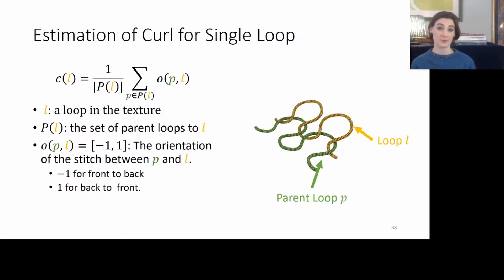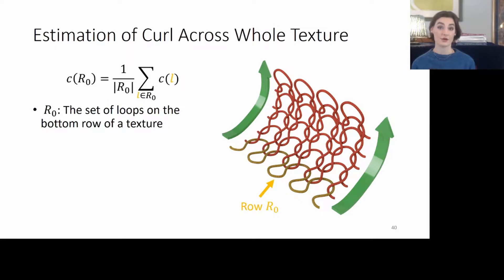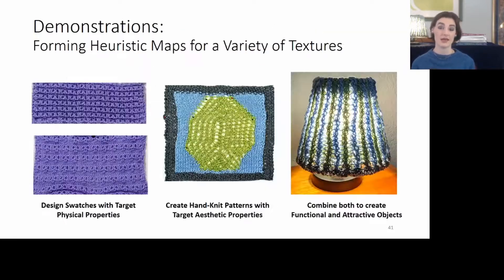An example objective is to estimate the curl of a loop, where we first consider the average orientation — knit or purl — between a child loop L and a parent loop P. We then consider recursively the effect of child loops which are pulled through L, M, and how far they are curling. To estimate the curl across a whole fabric, we simply take the average curl of all of the loops on the bottom row.